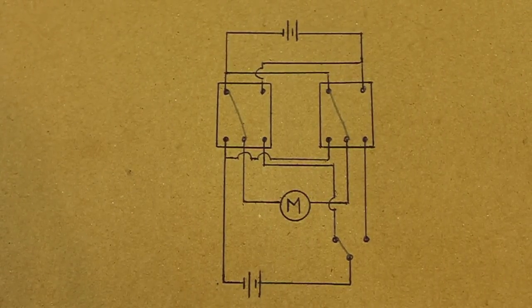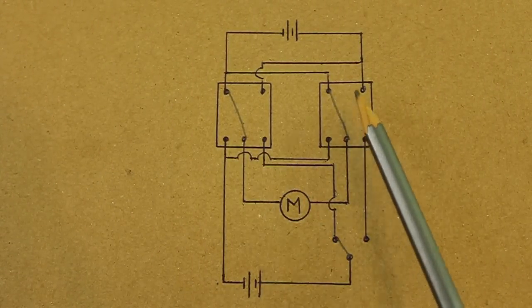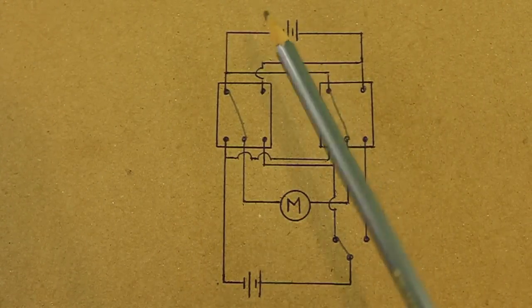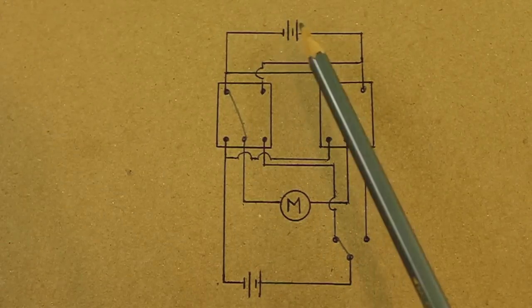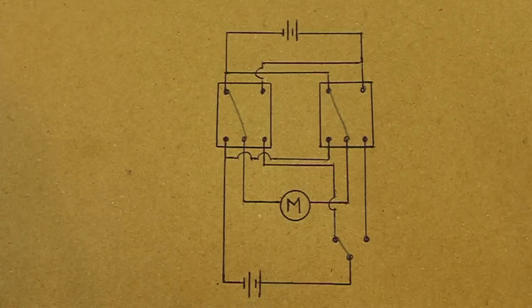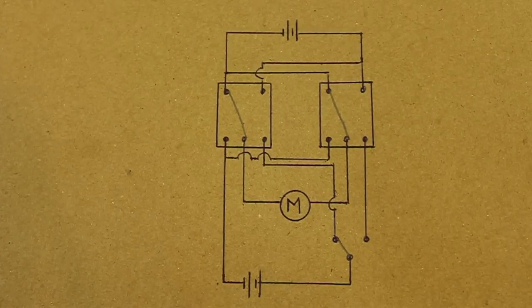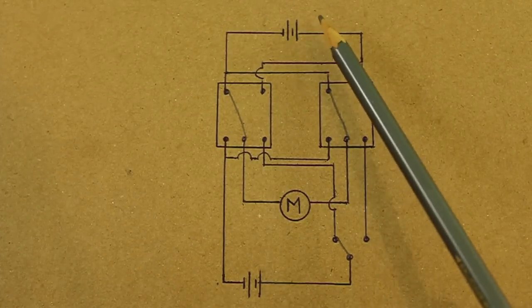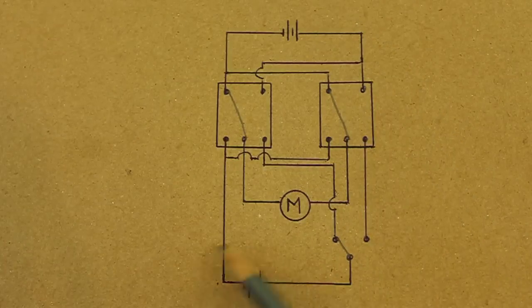Here we can see the diagram. The two relays. The motor. This is the battery for the motor and another battery for the relays. This is important because we have separated the power section and the control section.